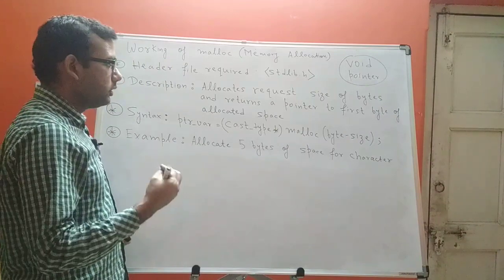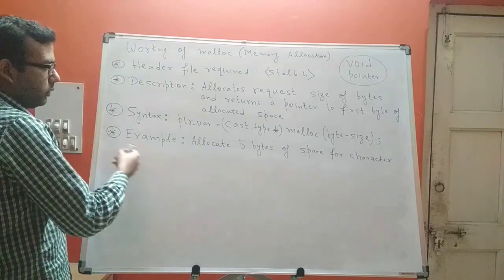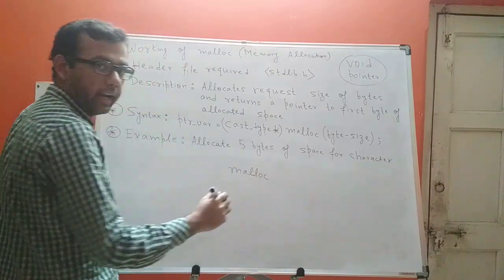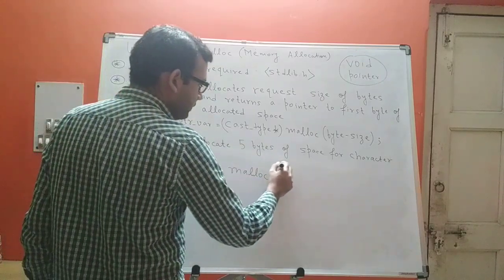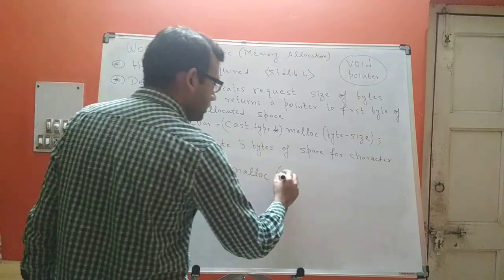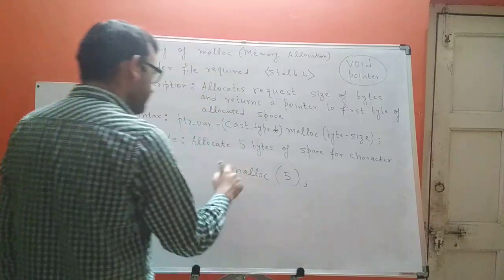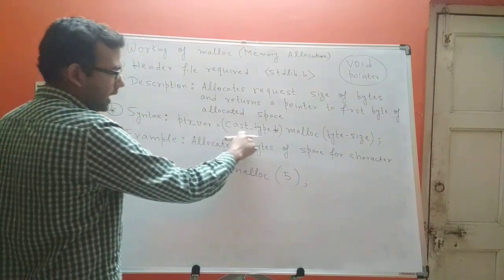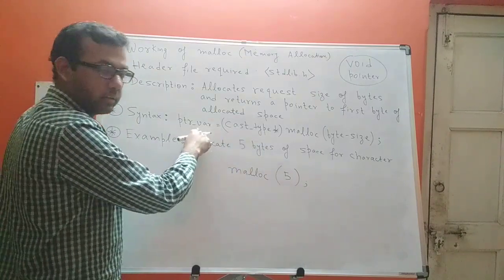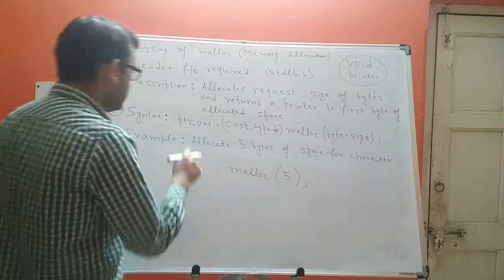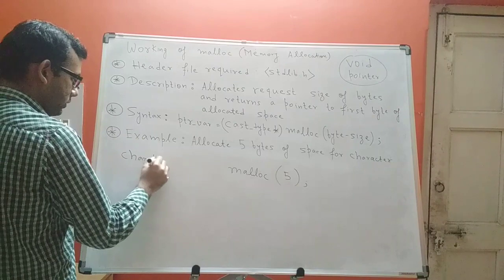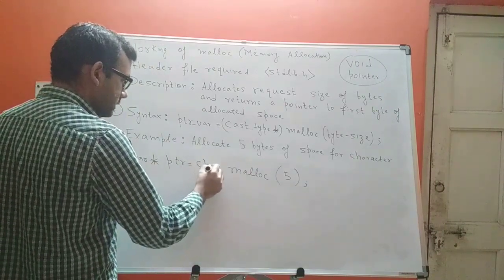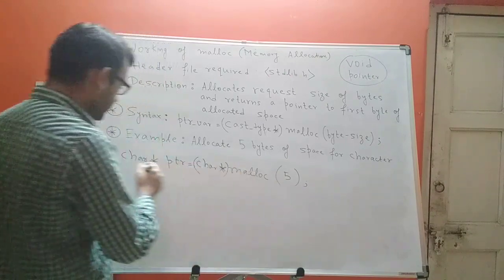I want to store a single character using five bytes of memory space. So the syntax for malloc — I'll write it as: char star ptr equals (char star) malloc(5). I want five bytes of space so I pass five. Malloc returns a void pointer, and since I want to store a character, I typecast it to char star. The pointer ptr is of type char star to hold a character.